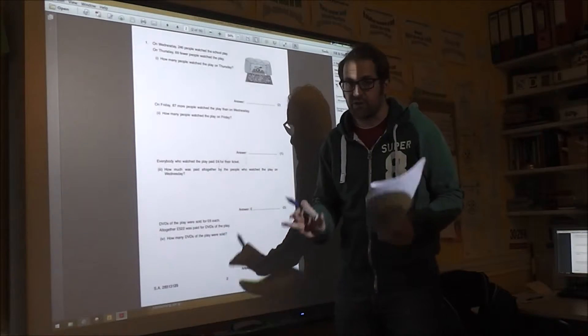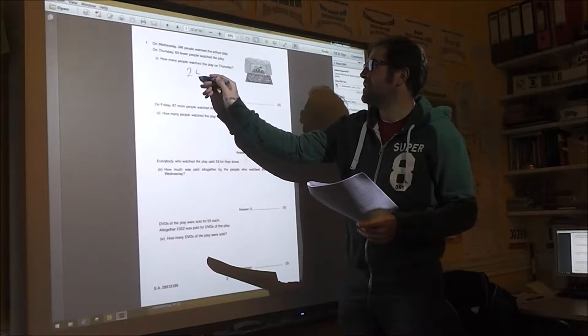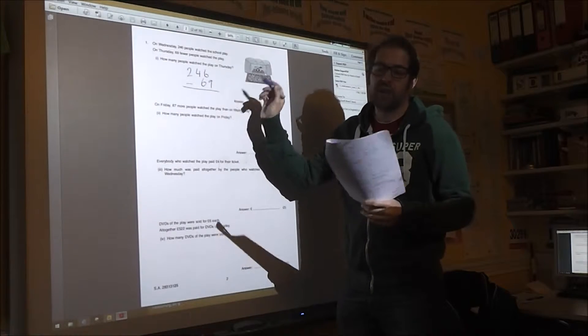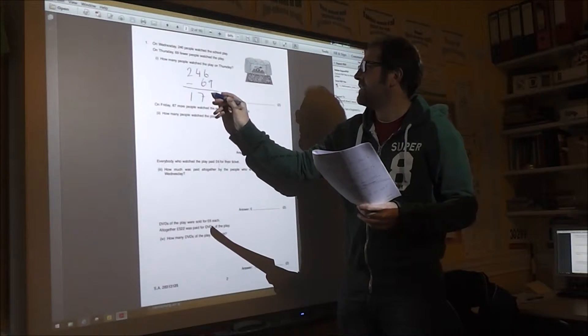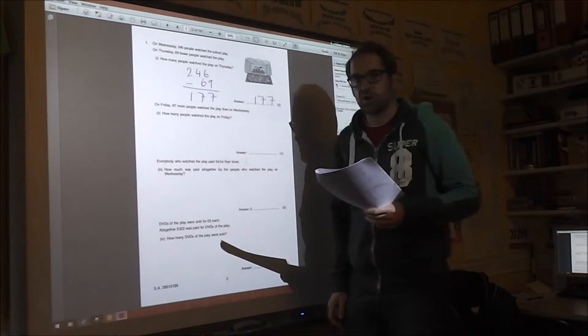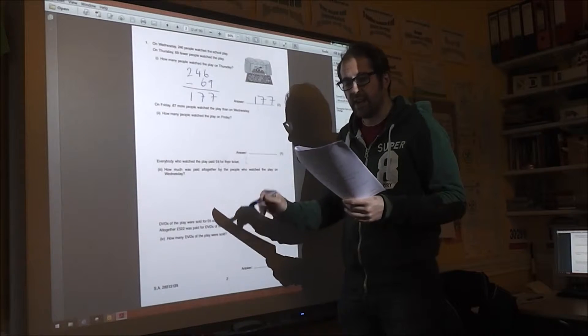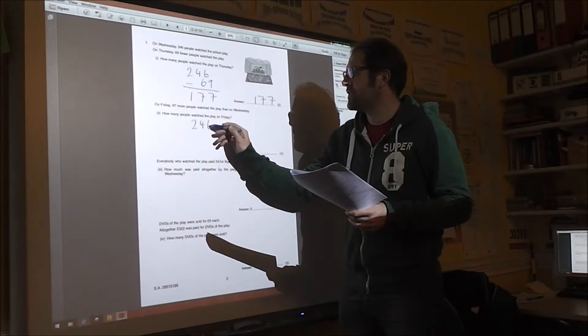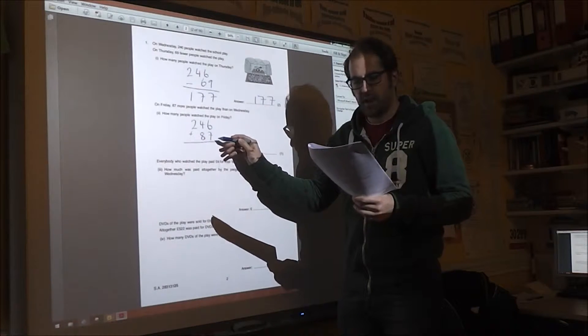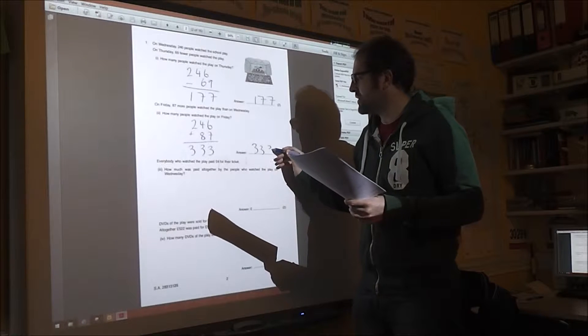Question 1 is worded number questions. Make sure you know these are either right or wrong, so it's worth checking. We've got 246 take away 69. Be very careful, make sure you carry and everything like that. 177 people watched on Thursday. Read this next one very carefully, don't mix up your days. So you've got 246 plus 87, which means 333 people watched on Friday.